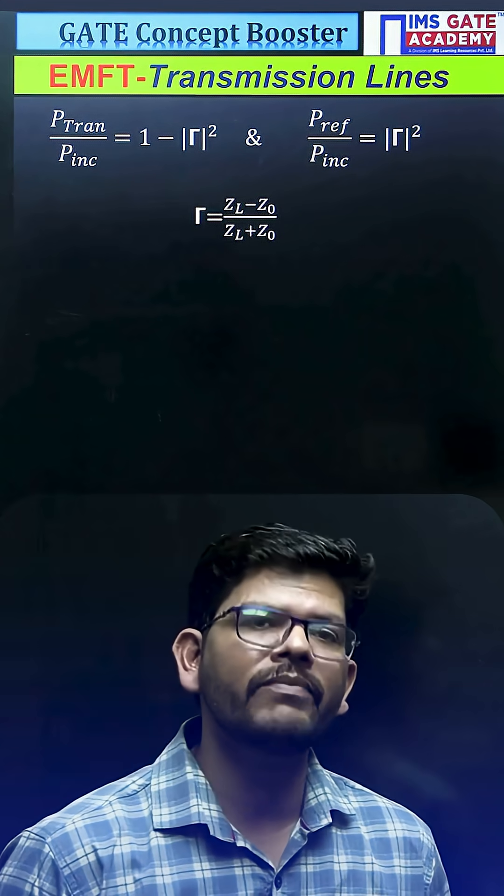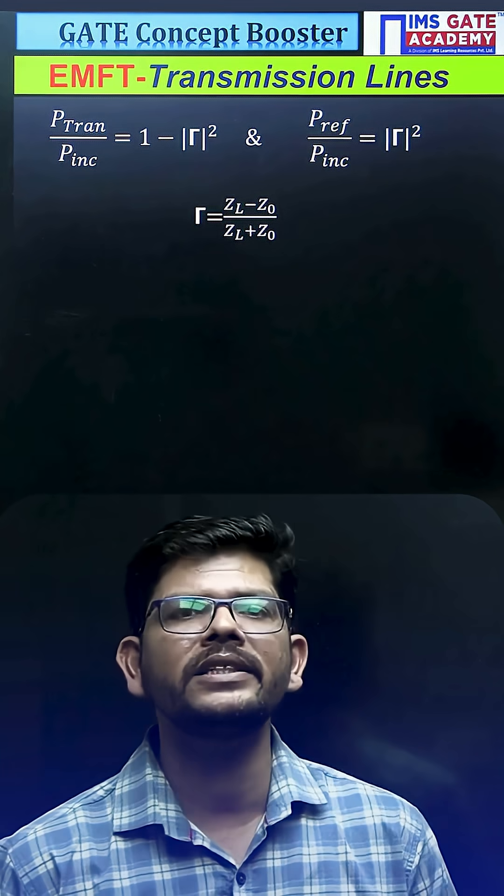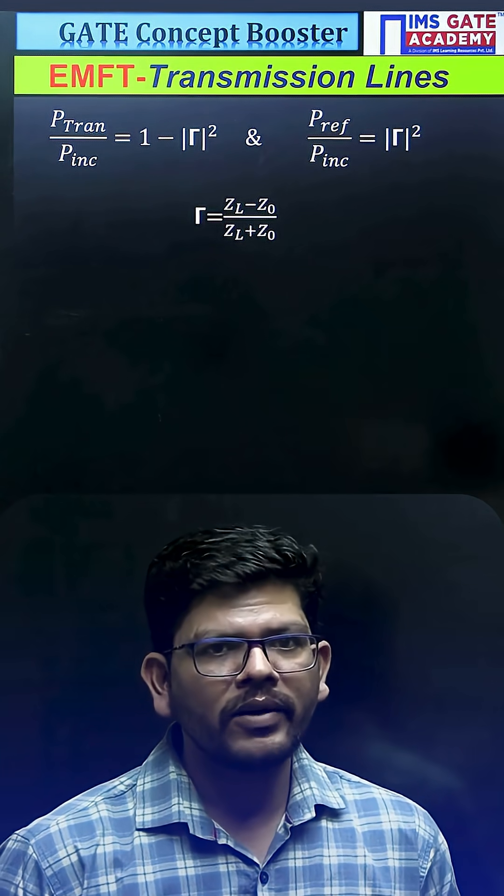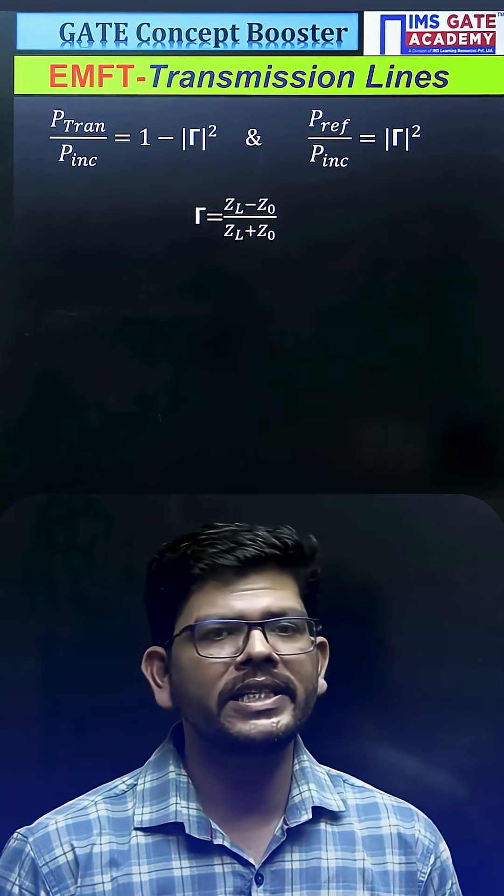The ratio of transmitted to incident power is 1 minus gamma squared. The ratio of reflected to incident power is gamma squared, where gamma is the reflection coefficient or voltage standing wave ratio, whatever is given to you.